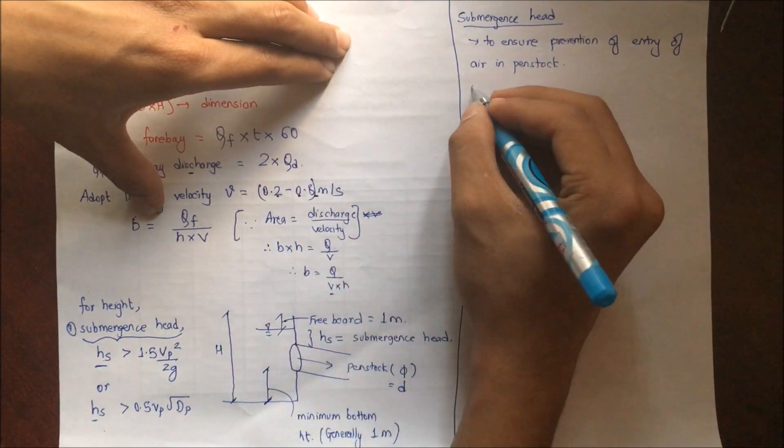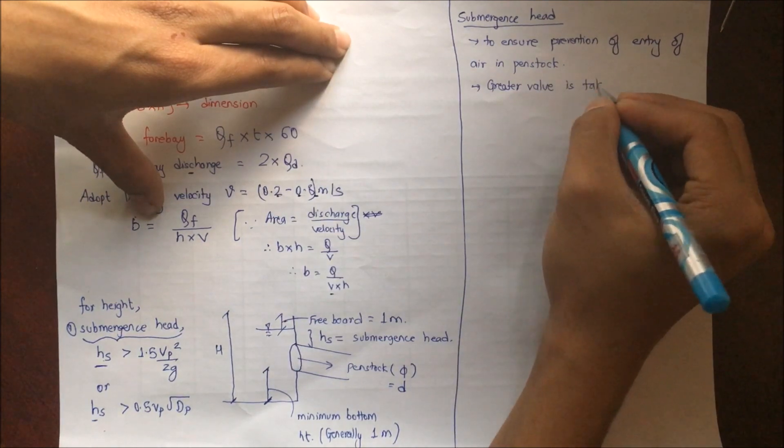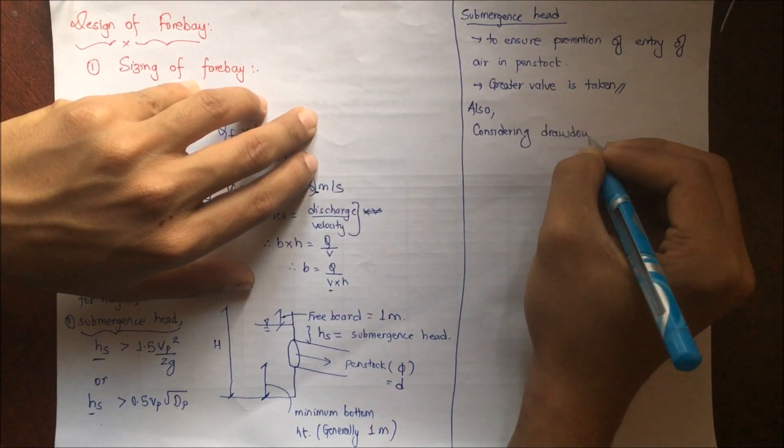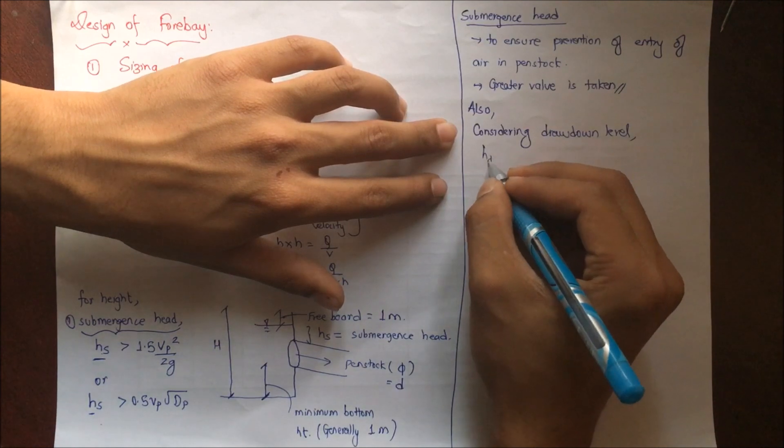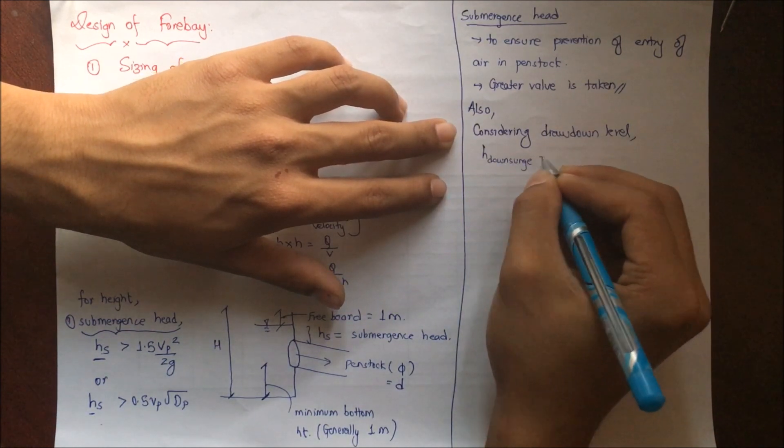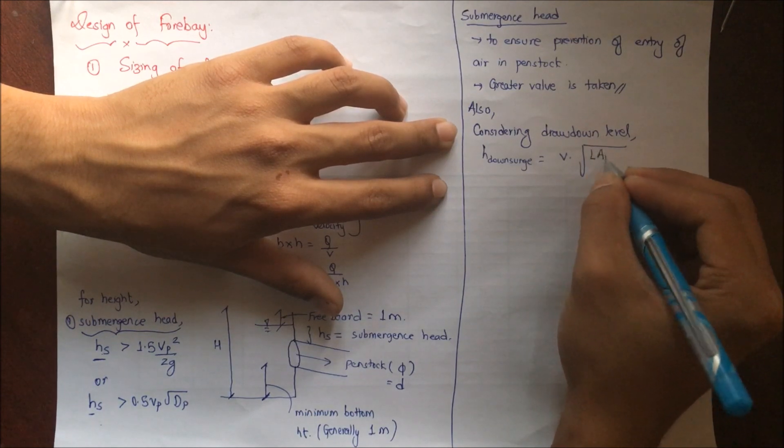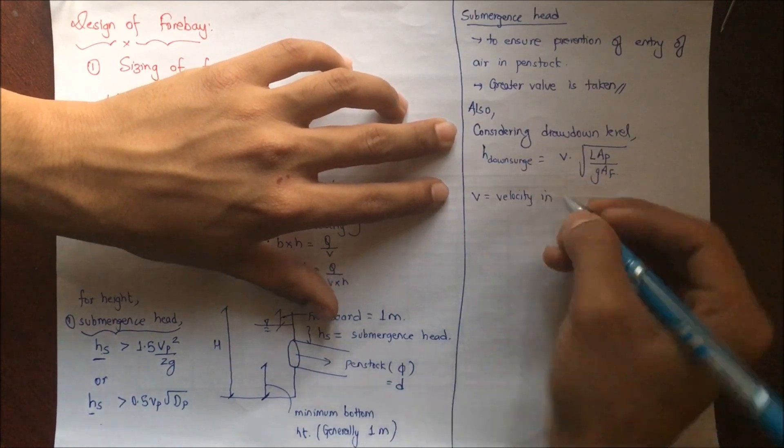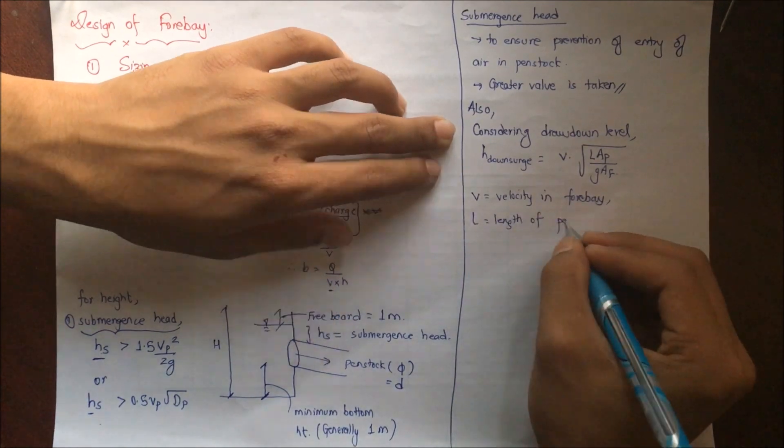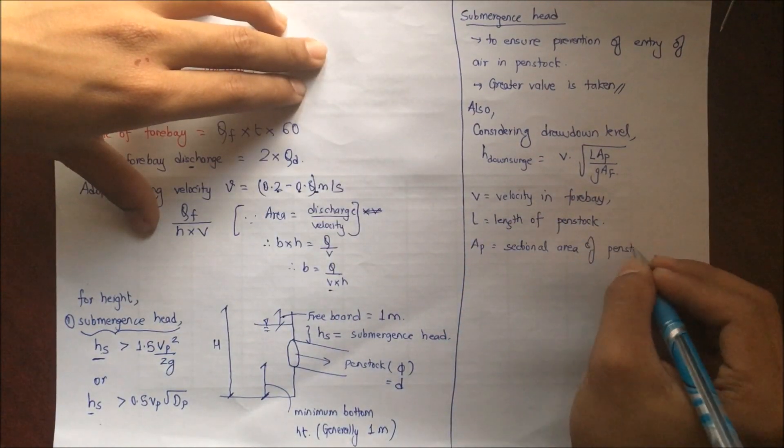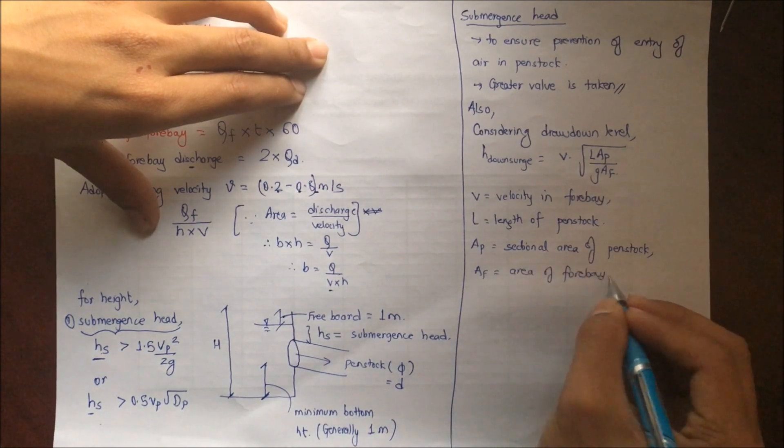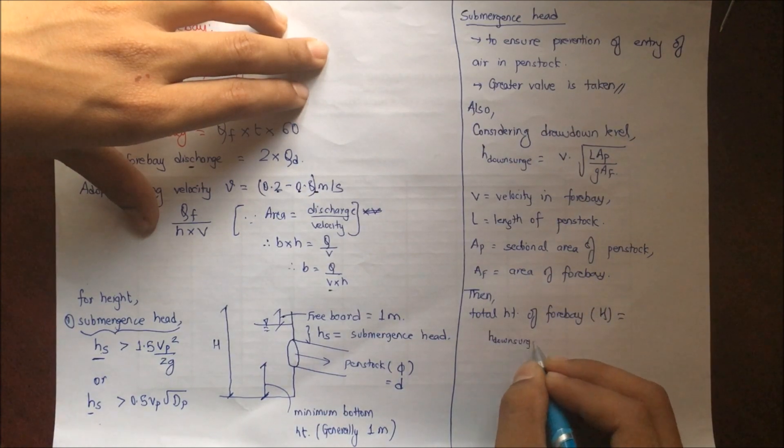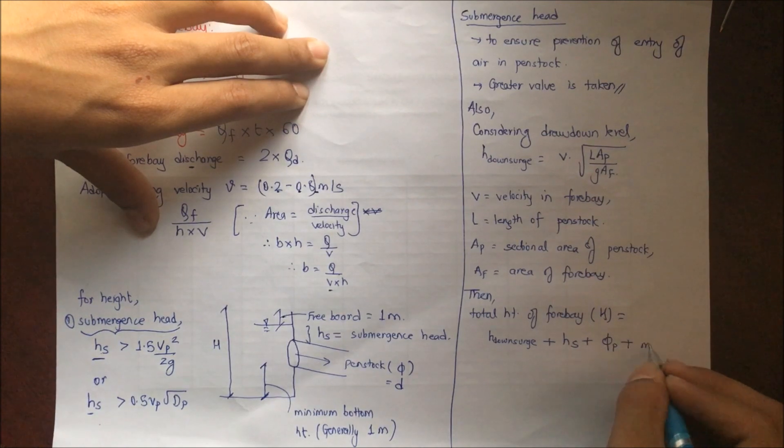Submergence head is provided to ensure prevention of entry of air in penstock. We have derived two values, so greater value between these two is taken. Also we have to consider the drawdown level for the prevention of entry of air in penstock. H downsurge = V × √(Lap/gAf). What are these terms? V is velocity in forbay, L is length of penstock, Ap is sectional area of penstock, Af is area of forbay. Then total height of forbay H will be equal to H downsurge + Hs + diameter of penstock + minimum bottom height + freeboard.